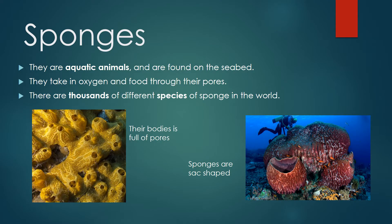Sponges. They are aquatic animals and are found on the seabed. They take in oxygen and food through their pores. There are thousands of different species of sponge in the world. Their bodies are full of pores and are sag-shaped.